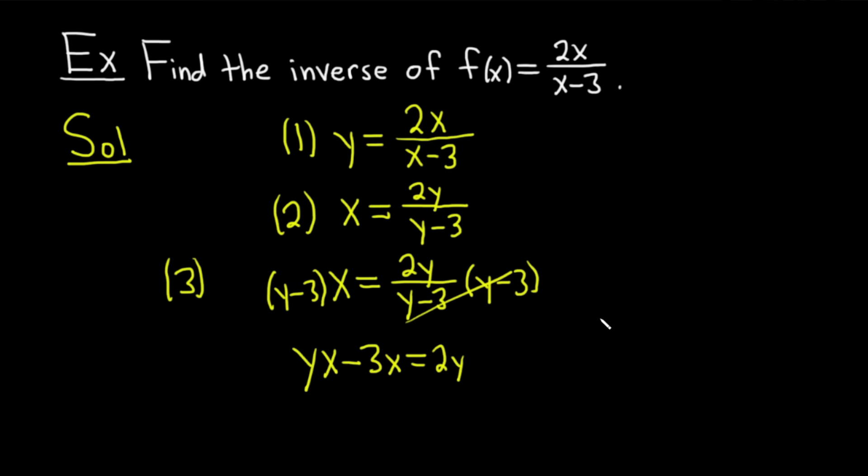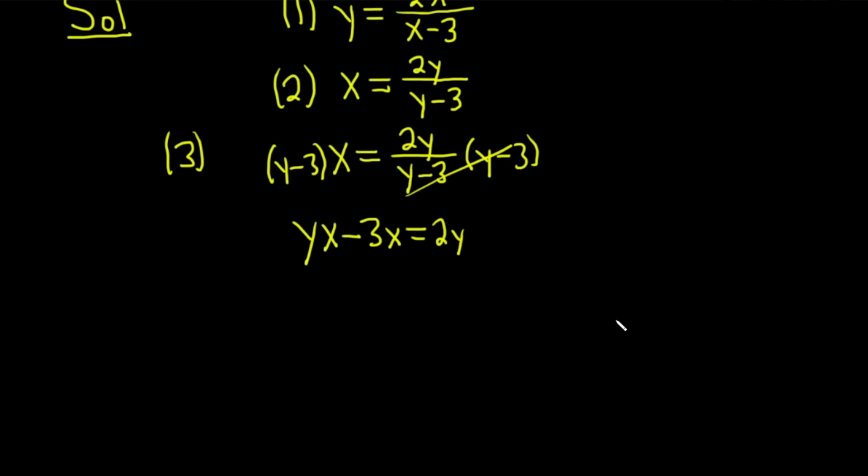At this point, we want to get all of the y's together on one side by themselves because we have yx - 3x = 2y. So if we can get all the y's together on one side by themselves, we can factor out the y. So I'm going to do it in one move because I feel like it's a little bit easier maybe. I'll do it in two steps. So let me just do it in two just in case.